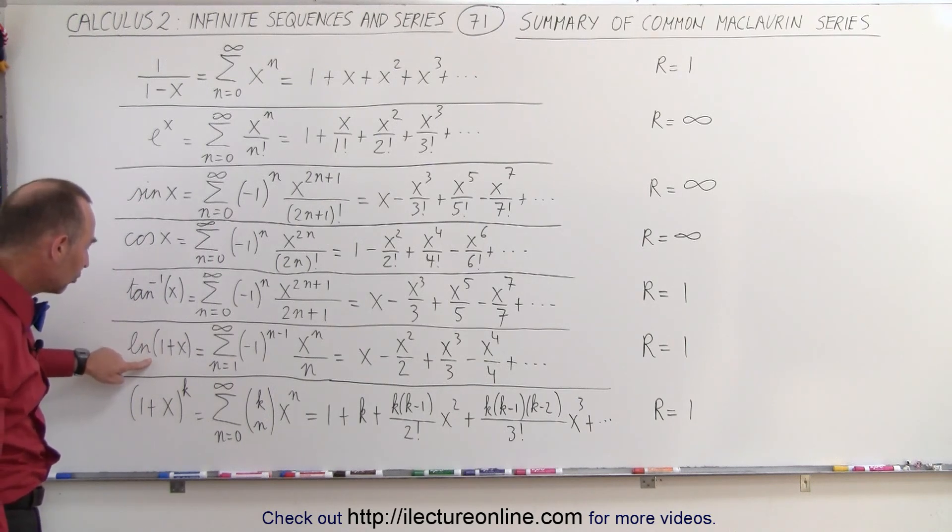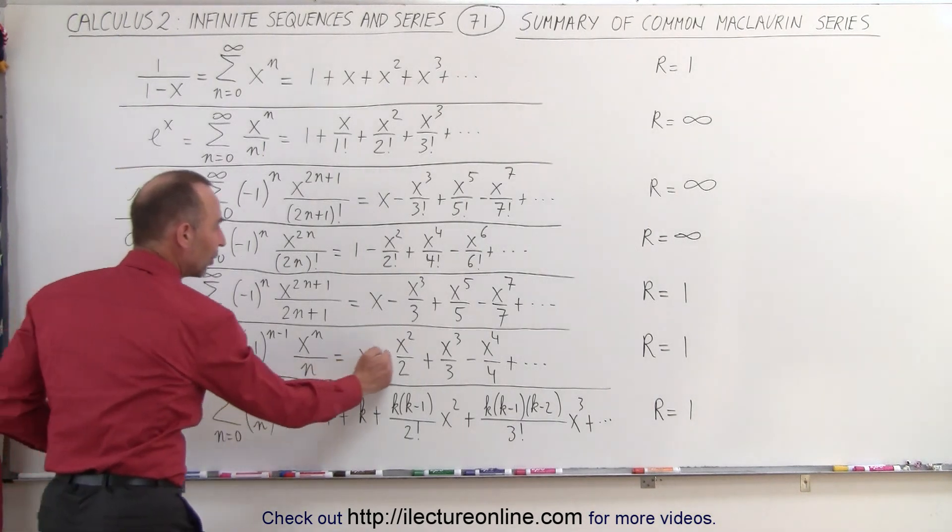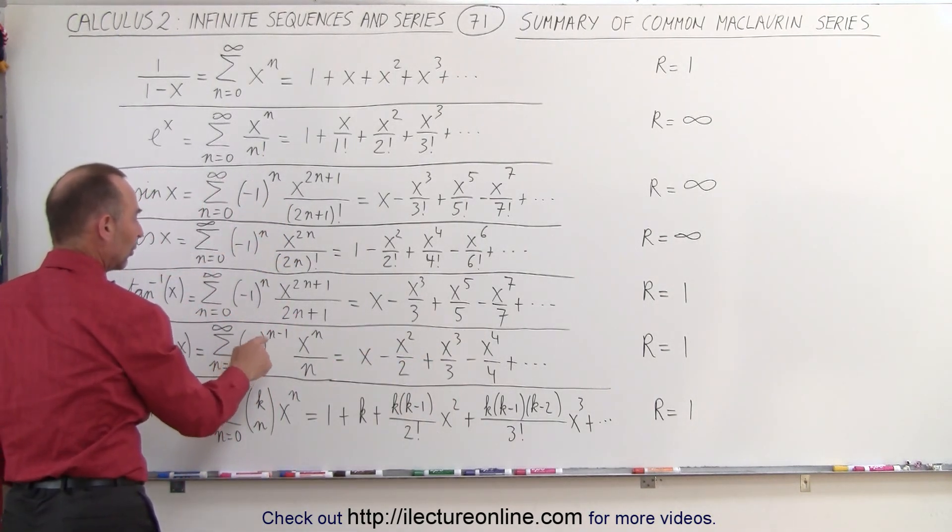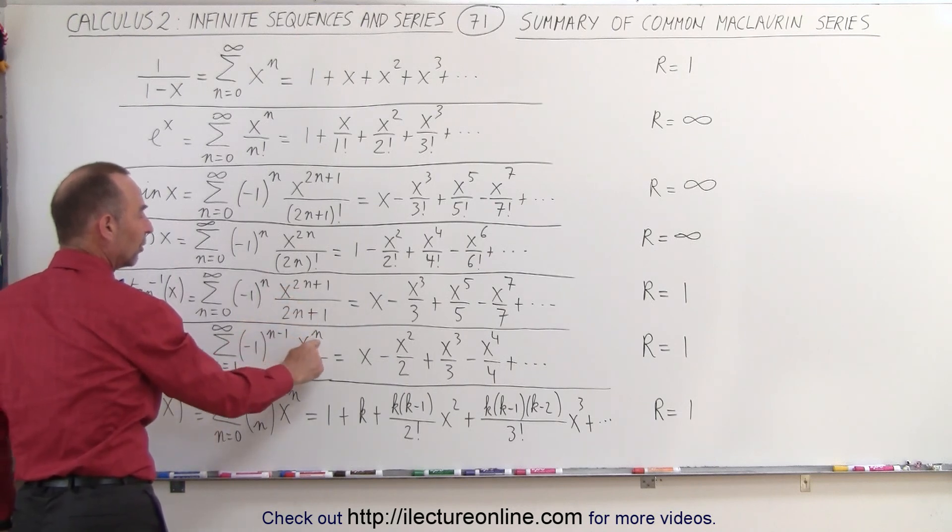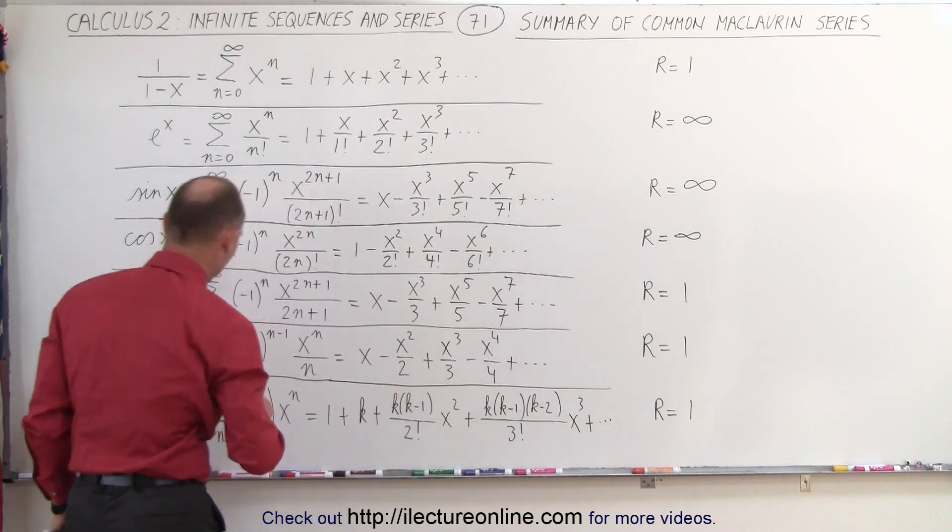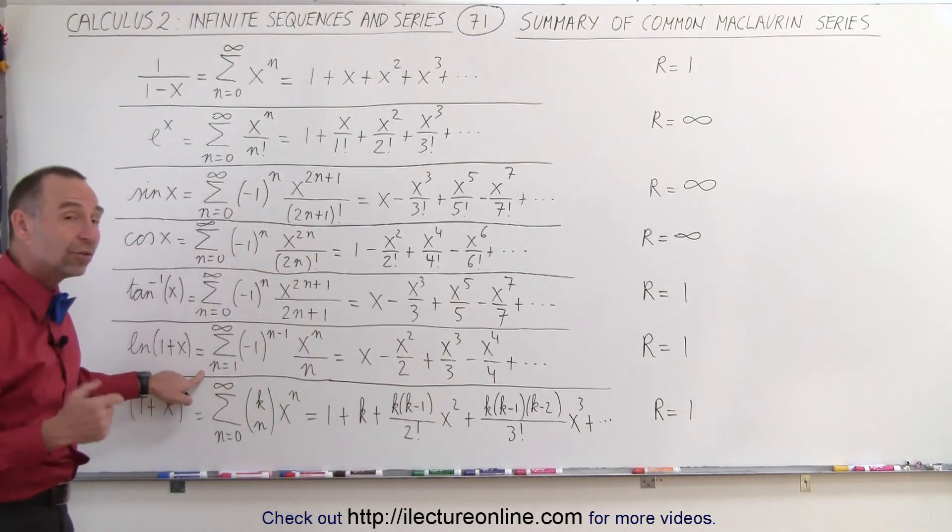Now the natural log of 1 plus x can be written as follows. Again we have the alternating signs, notice we don't skip any terms, so we don't have a 2n factor in the numerator, so we have x to the n power, so we have x, x squared, x cubed, x fourth, and so forth. We don't start at n equals 0.